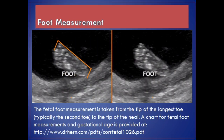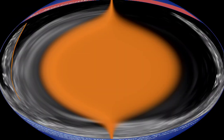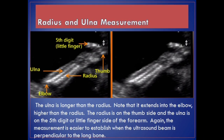Foot measurement. The fetal foot measurement is taken from the tip of the longest toe, typically the second toe, to the tip of the heel. Radius and ulna measurement. The ulna is longer than the radius — it extends into the elbow higher than the radius. The radius is on the thumb side and the ulna is on the fifth digit or little finger side of the forearm. The measurement is easier to establish when the ultrasound beam is perpendicular to the long bone.